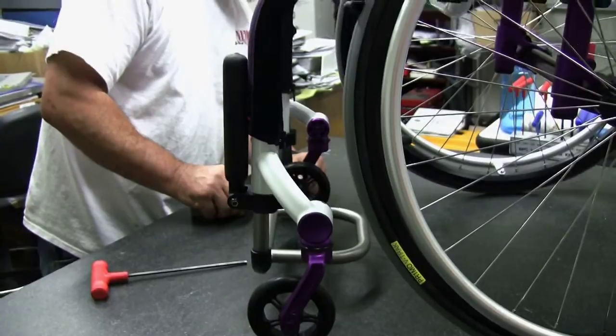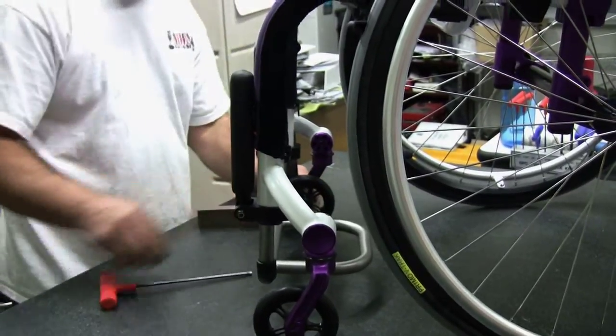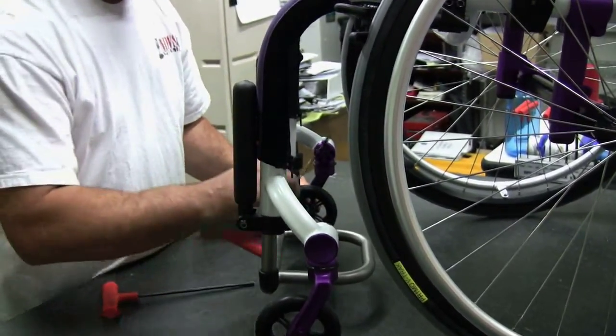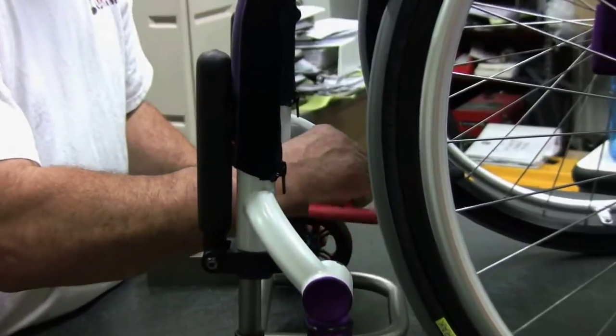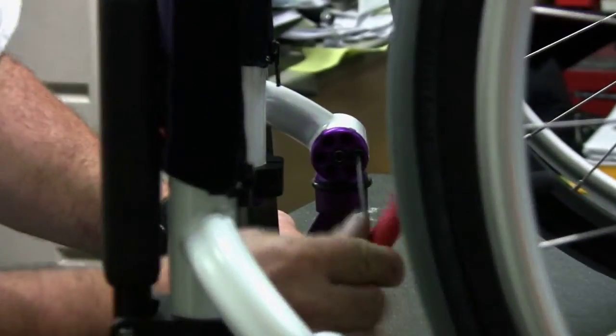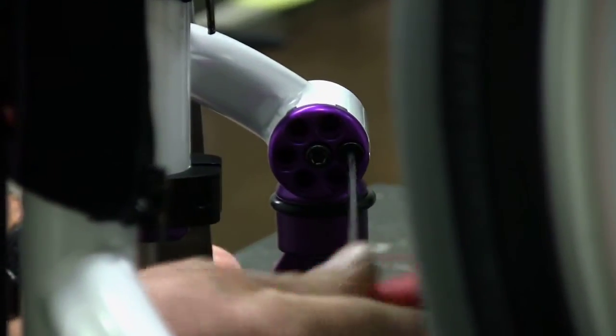Step 5: While holding the fork in place and with the end cap tabs engaged in the tab slots, check to see if one of the 6 perimeter holes in the caster end cap aligns with one of the 3 threaded holes in the caster mount. If so, proceed to step 7.